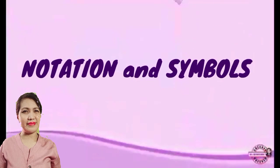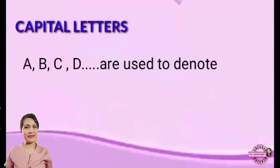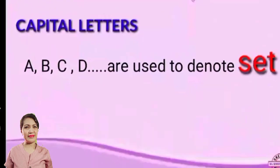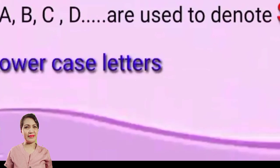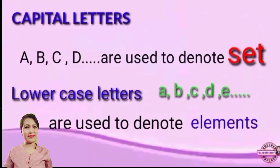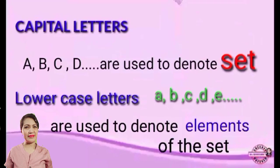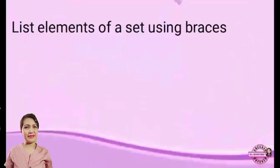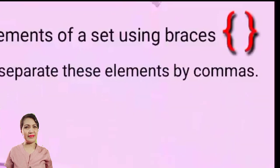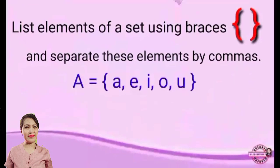In dealing with sets, we have notations and symbols we need to remember. We use capital letters or big letters to denote a set, and lowercase or small letters to denote the elements of the set. We list elements of a set using braces and separate these elements by commas.